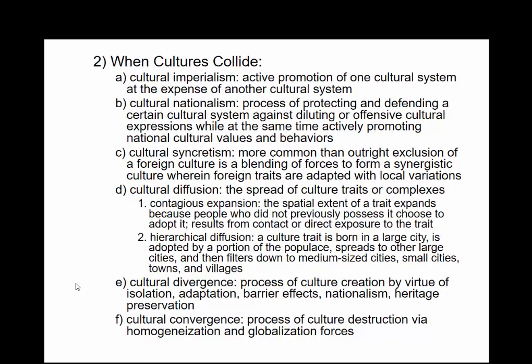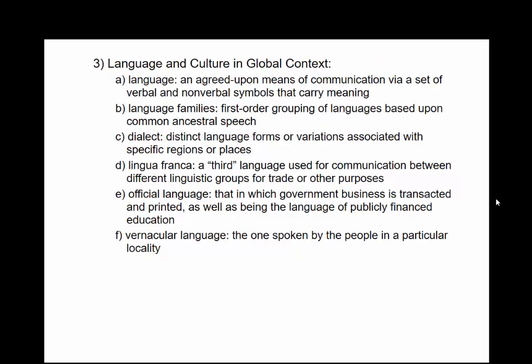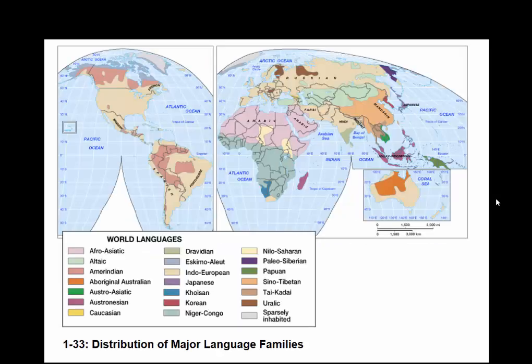When cultures collide, we have cultural nationalism, cultural imperialism — where we pass culture sometimes in violent ways — and cultural diffusion, the spread of culture traits or complexes. These talk about how culture spreads and what the barriers are to it. Then there's the whole idea of language — official languages, which may differ from what's actually spoken. Places like Mozambique or Angola have Portuguese as the official language because of Portuguese settlement, but not necessarily many people speak it. Traveling through Europe, a lot of people speak English.